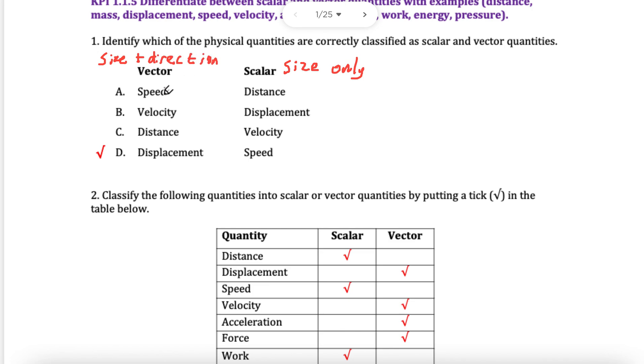Speed is a scalar, it has size only. The vector equivalent of speed would be velocity. So this option says vector and speed, that's clearly wrong. Option B says velocity is a vector, which is correct since it's speed with direction. Displacement is a vector, distance is the scalar. Displacement is the vector of distance, it has a direction. Distance is scalar, so it's in the wrong column here. That leaves one option. Displacement is vector, speed is scalar, that's why the answer is D.